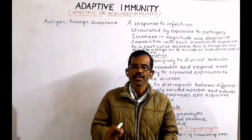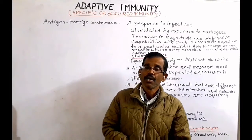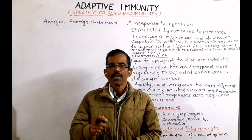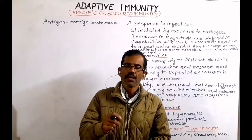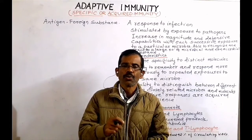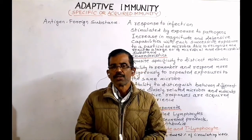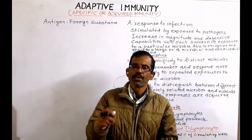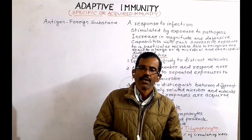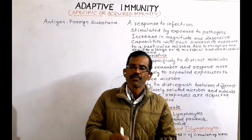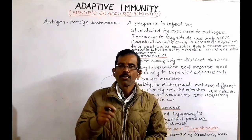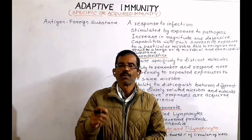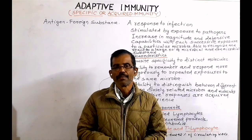Today we shall discuss about adaptive immunity. Adaptive immunity is also known as specific immunity or acquired immunity. It is a form of immunity that develops as a response to an infection.